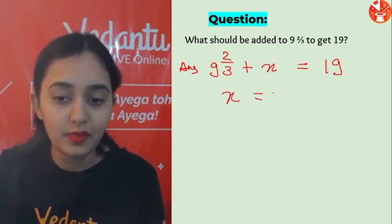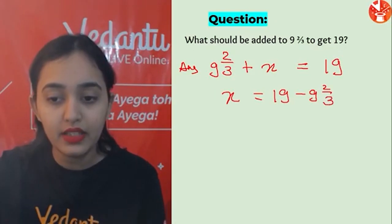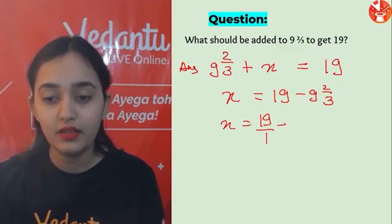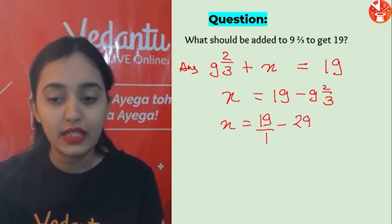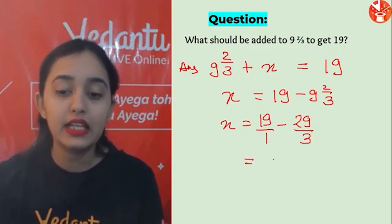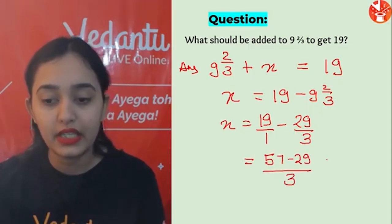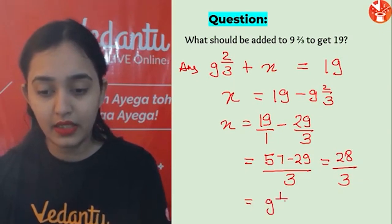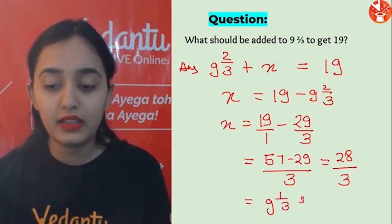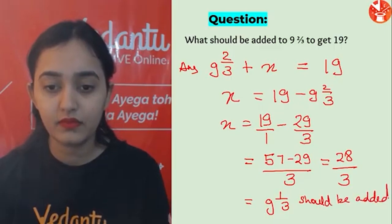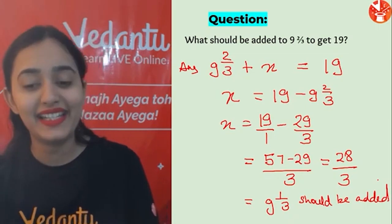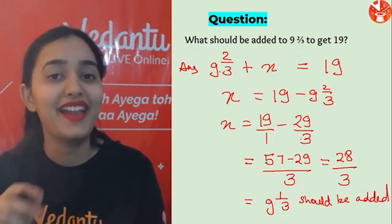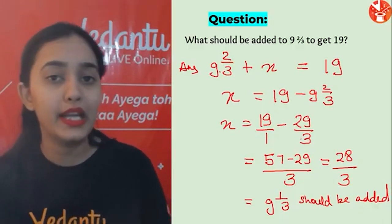So x = 19 − 29/3. Converting: 19 = 57/3. Then 57/3 − 29/3 = 28/3. Converting to mixed fraction: 28/3 = 9 1/3. So 9 1/3 should be added to 9 2/3 to get 19. Verification: 9 + 9 = 18, and 2/3 + 1/3 = 1, so 18 + 1 = 19. Correct!